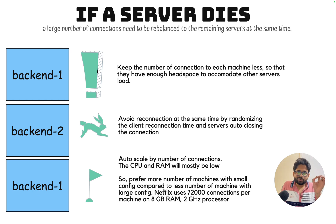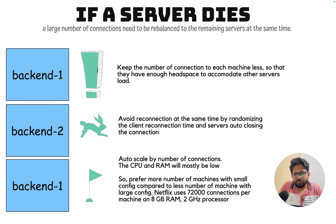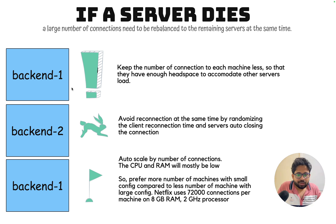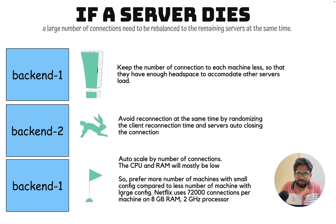There are two options: have three big, expensive machines and cram as many connections as possible — maybe millions. The problem is if one of those three machines dies, all those million connections will bombard the remaining machines. Instead, prefer more machines with smaller configs rather than fewer machines with large configs. This means fewer connections per machine, better scaling, and less disruption if one machine dies — you have fewer connections to rebalance.